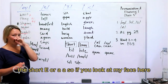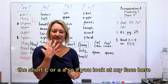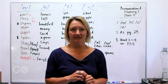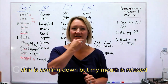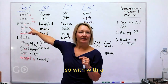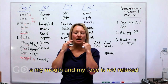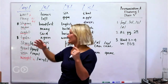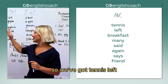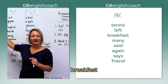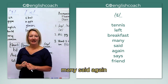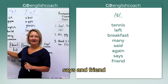The short E, or eh. If you look at my face, my mouth is not moving very much — my chin is coming down but my mouth is relaxed. With the long A, my face is tense; with this one it's relaxed. So we've got: tennis, left, breakfast, many, said, again, says, and friend.